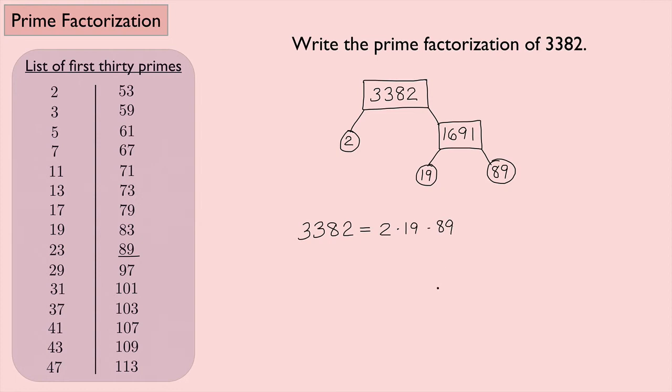So the prime factorization of 3,382 is going to be 2 times 19 times 89. So that one was kind of a tricky one. It was not obvious that we would have these when you have the larger primes. Those ones can be a little bit tricky. But if you need to, use the chart of prime numbers and use a calculator to help you figure out if things will work or not. Let's look at one more example.